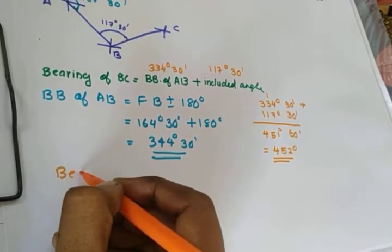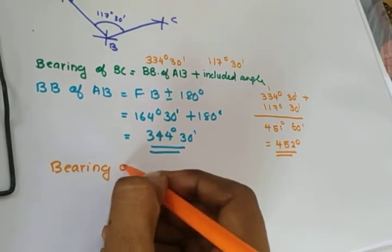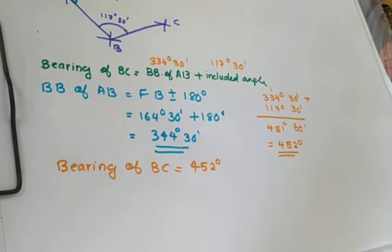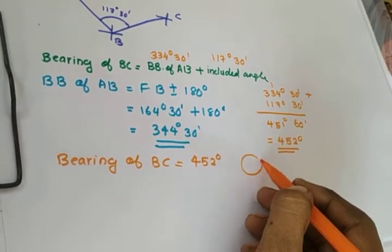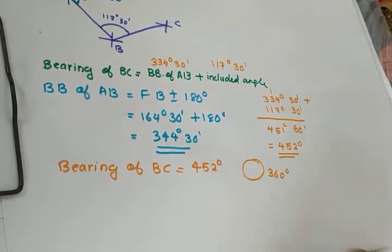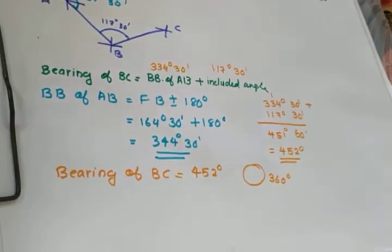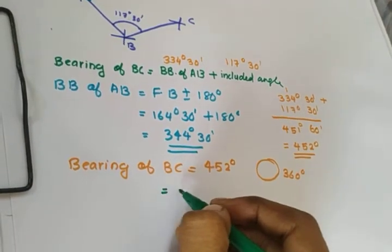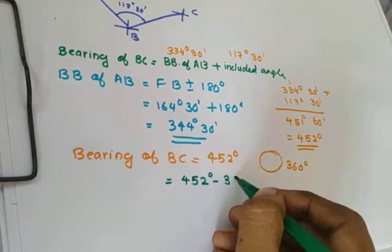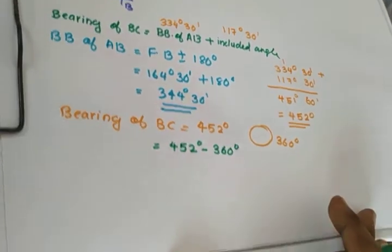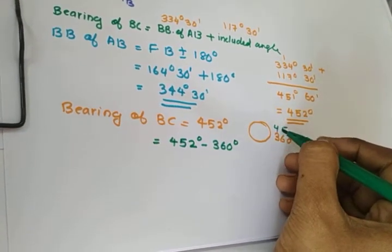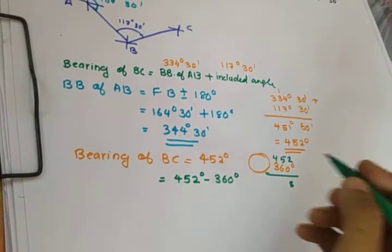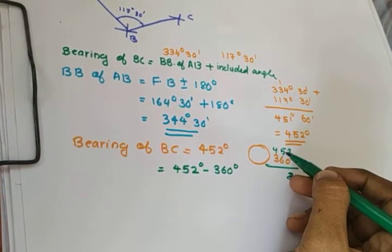Bearing of BC — we subtract 360 degrees since the result exceeds 360. That's the correct answer. The answer is 452 degrees minus 360, giving us 92 degrees.